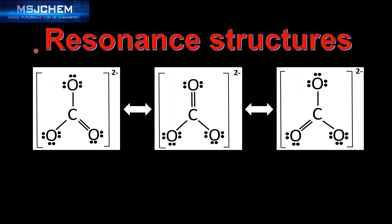Let's start with a review of resonance structures. Resonance structures occur whenever there is more than one possible Lewis structure for a molecule or ion. Here we have the three possible Lewis structures for the carbonate ion, each with a double bond in a different location, so there are three possible resonance structures for the carbonate ion.